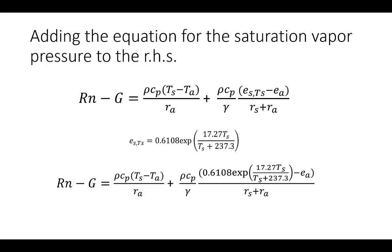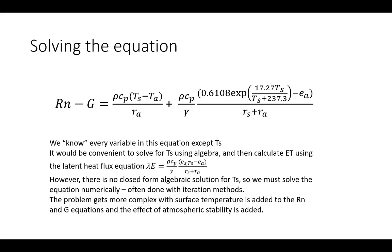We can take Teton's equation in the form proposed by Murray — saturation vapor pressure as a function of temperature — and substitute it into our formula to get the basic energy balance combination equation. To solve it, we need to solve for surface temperature, which appears in three different locations in the equation. Unfortunately, there is no closed-form solution for surface temperature, so we have a challenge.